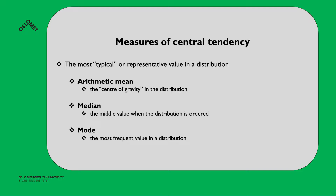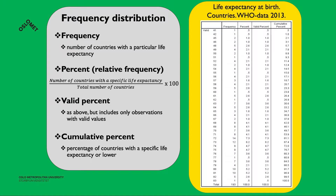To calculate these measures, we use the frequency distribution. The frequency is the number of countries with a particular life expectancy. For example, you have five countries with a life expectancy of 61, one country with 62, and ten countries with a life expectancy of 81 years.